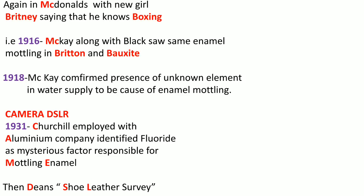Continuing — he knows how to do boxing and he owned his own personal DSLR camera. 'Camera': in 1931, 'C' stands for Churchill, who was employed with 'A' for Aluminium Company, and identified fluoride as the mysterious factor responsible for 'M' — mottling of enamel. Now 'DSLR': DSL is very important — that is Dean's Shoe Leather survey — a very important event in the historical evolution of fluoride.